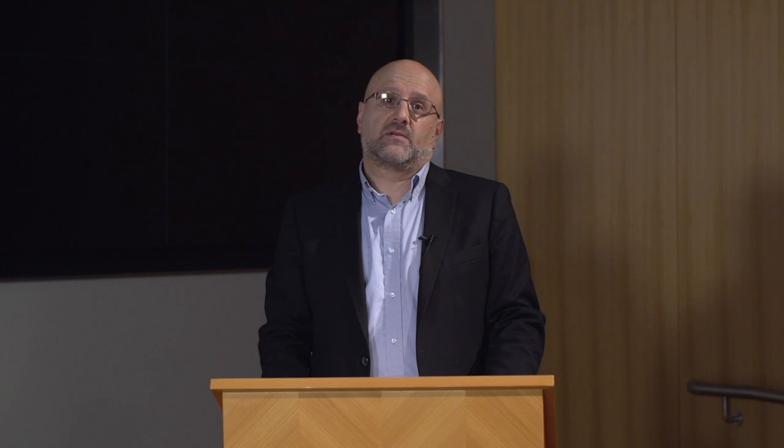Eventually, Menger argued, this process will converge down to one or maybe two goods that serve as widely accepted media of exchange. This, he argued, is money. What we mean by money is a generally accepted medium of exchange. When everybody, or almost everybody, is using the same good to effect these exchanges, we have money.